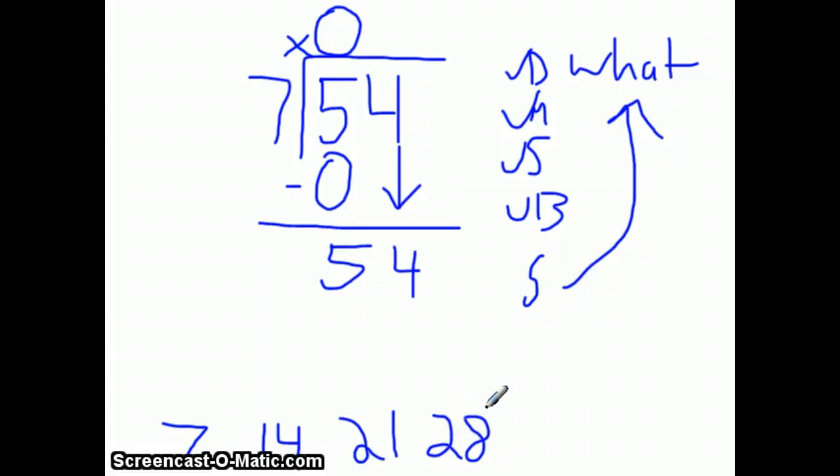Now I'm just going to go ahead and write these factors, because I already know them. Excuse me, not the factors, these multiples. So we go 7, 14, 21, 28, 35, 42, 49. And I'm going to stop there, because my next one would be 56, which is too large.